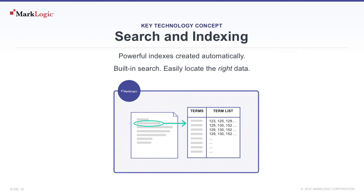MarkLogic has enterprise search built in, enabling organizations to turn big data — petabytes of information stored across multiple systems — into useful results, without the need to shred the data. MarkLogic indexes all data on load and makes it immediately searchable. The full-text search engine includes faceting, real-time alerting, type-ahead suggestions, snippeting, language support, and much more. Search applications are in production with billions of documents and petabytes of data, providing relevant, accurate search results with sub-second response times.